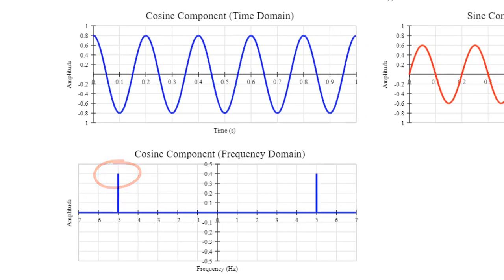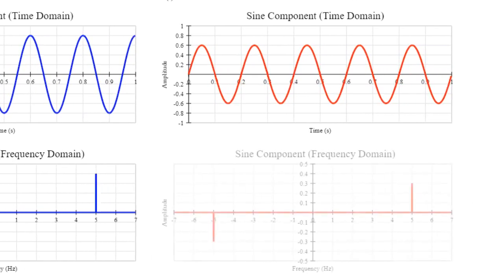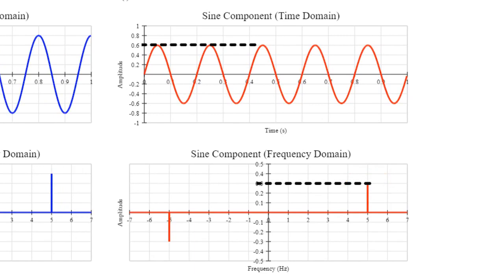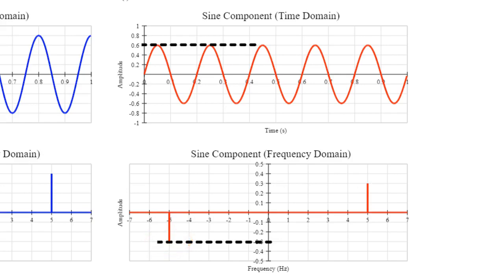Looking at the frequency domain representation of the sine component, something similar happens. At the 5 hertz frequency, the amplitude is half of that shown in the time domain graph. But at minus 5 hertz, the amplitude is minus a half of the time domain amplitude. What's going on here, and what's this negative frequency?